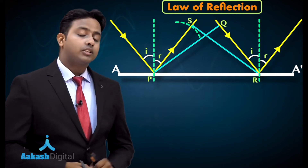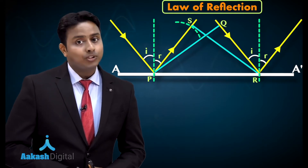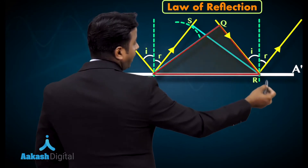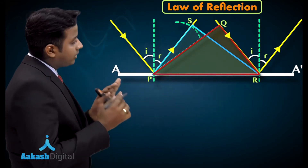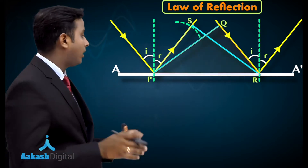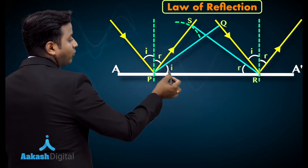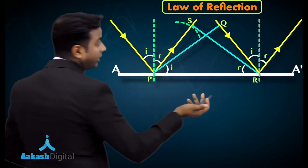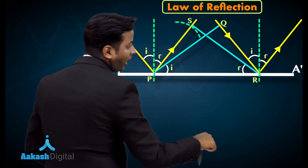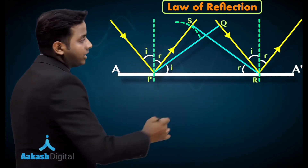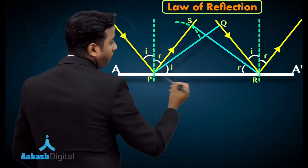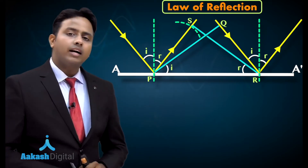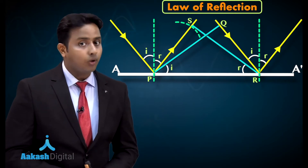After constructing the reflected wavefront, we get two geometrical triangles: PRQ and PRS. Since PQ is perpendicular to the incident beam, the angle in triangle PRQ is i — the angle of incidence. Similarly, when QR is the incident ray at point R, it reflects at angle r, so the angle PRS in triangle PRS equals r, the angle of reflection.